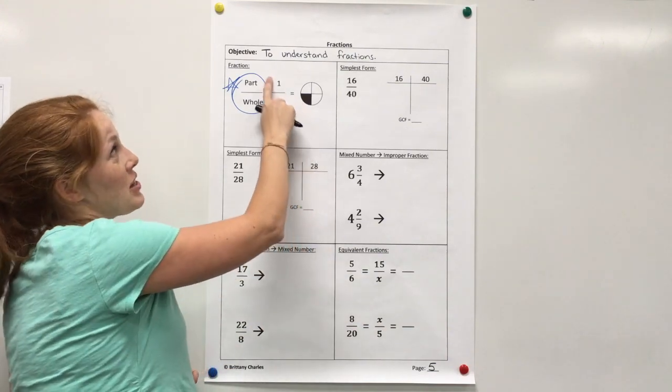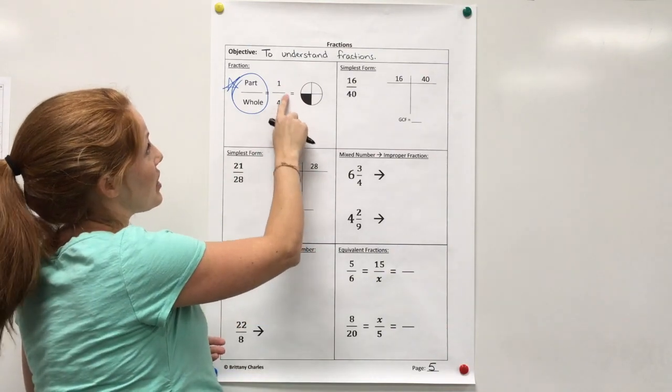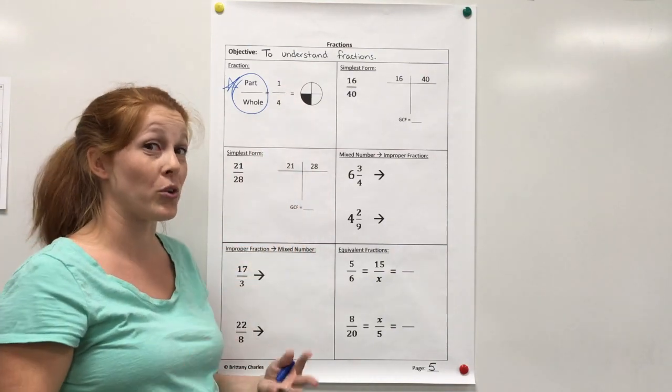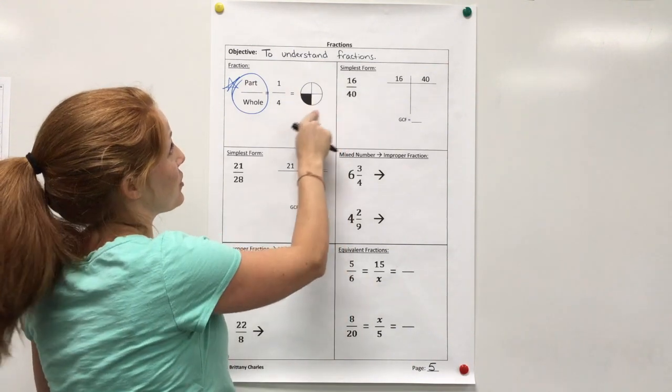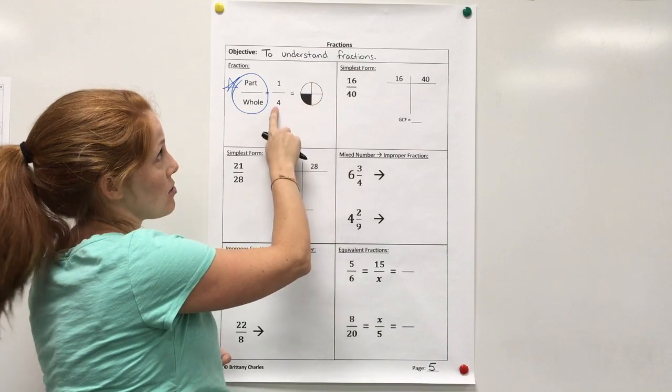Alright, so if I'm looking at a fraction, the numerator is my part and the denominator is my whole or the total. Okay, so if I look at this picture, I have one part that is shaded out of four equal parts.